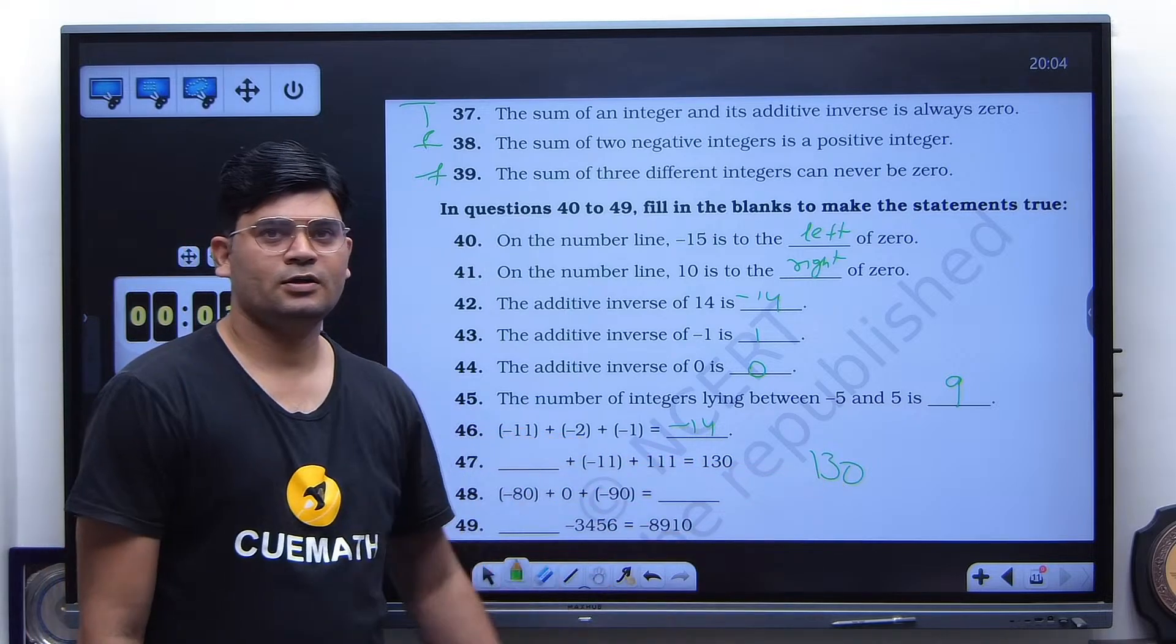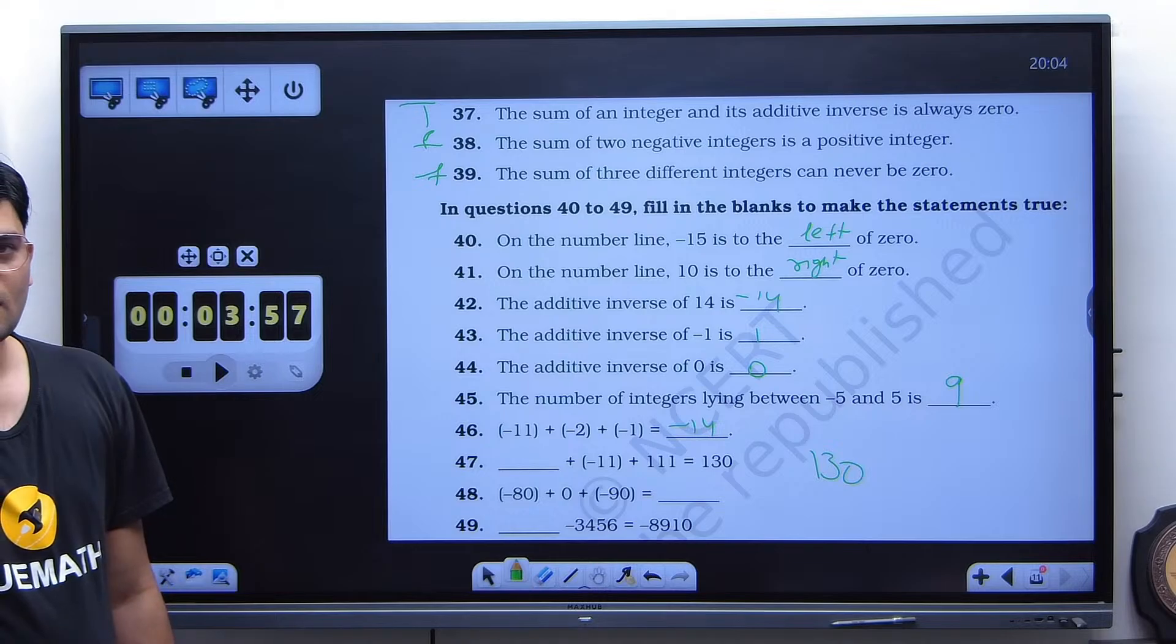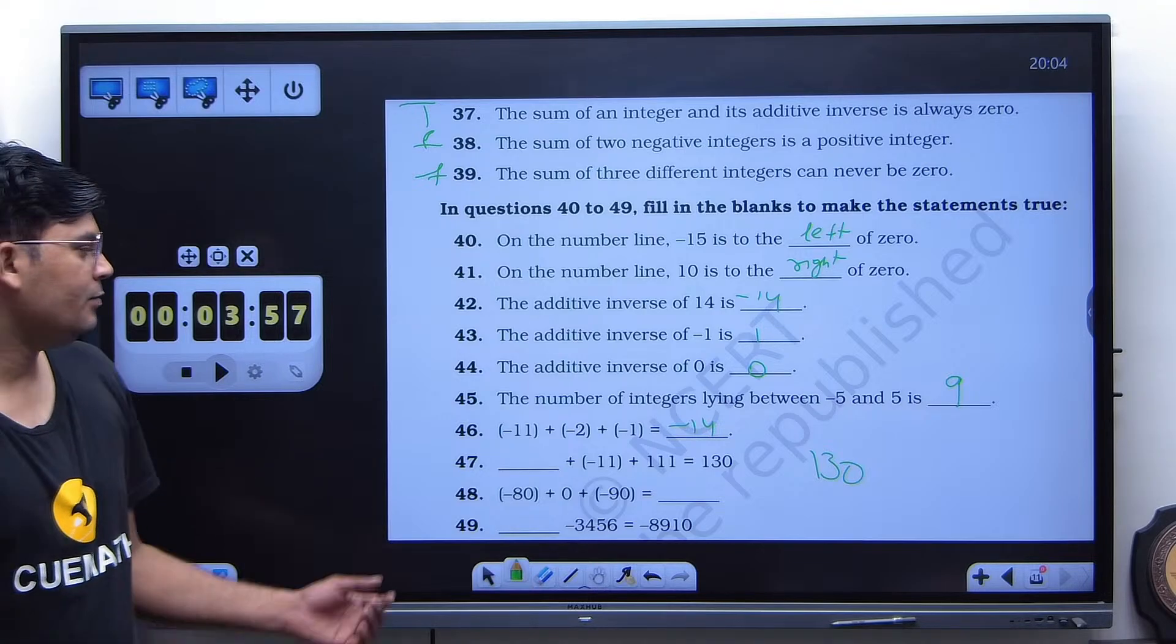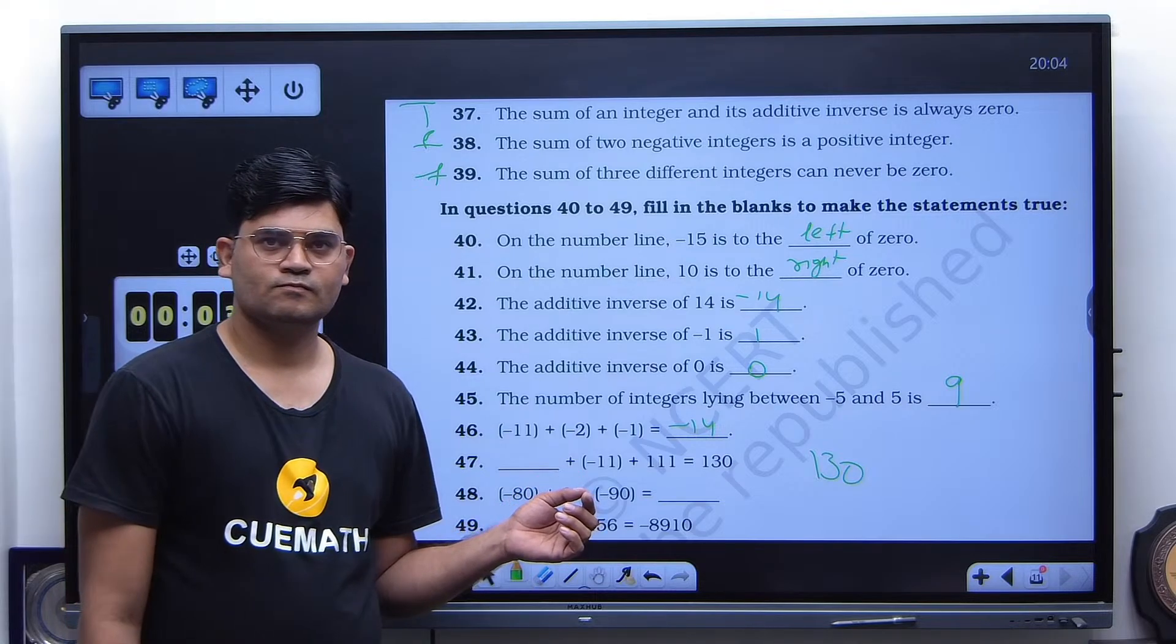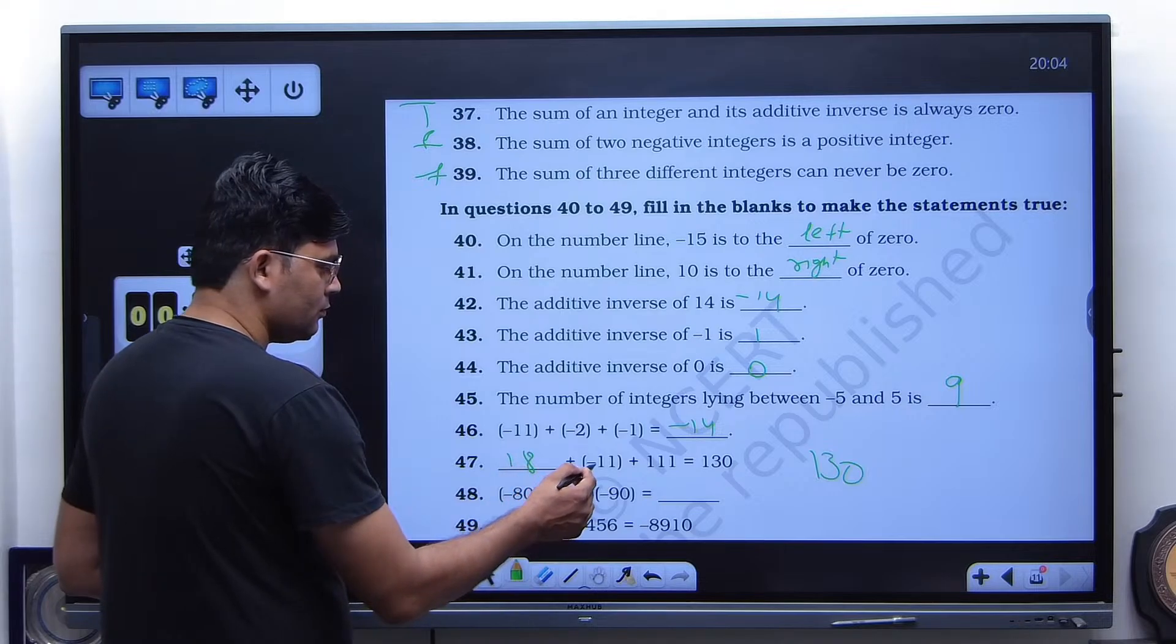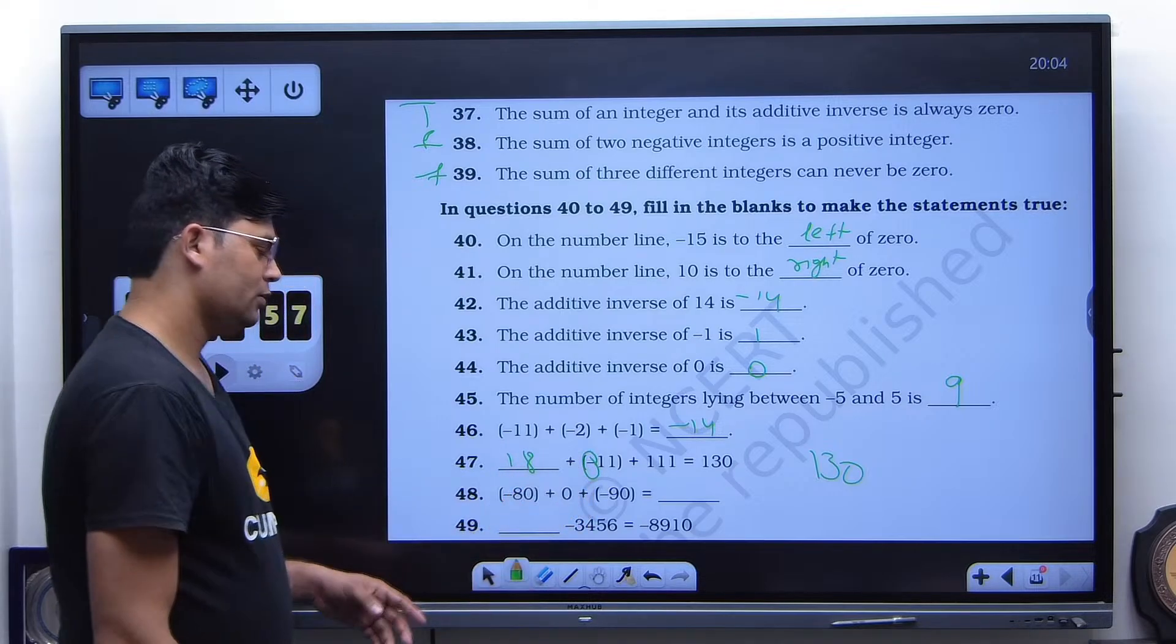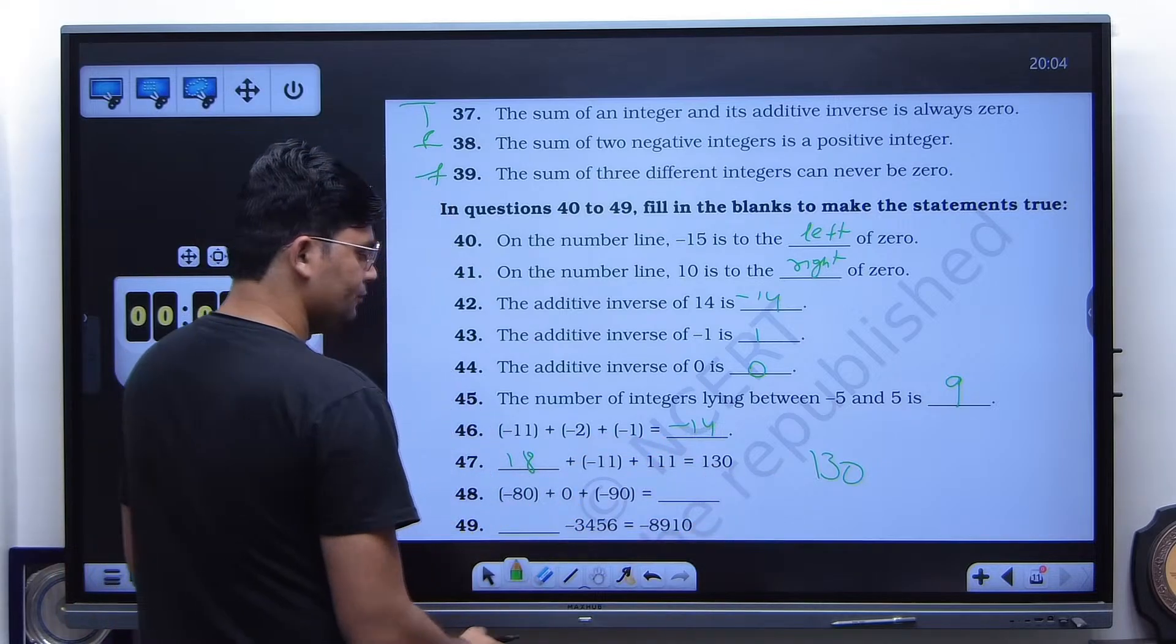I said 18. 18 means 188 or 8080? 18. How you got 18, dear? 18. That's why. One minute. One minute. Yeah. One minute. Let me see. See, 111 minus 11 is going to be 100. So 100 plus 30 will be 130. Okay.